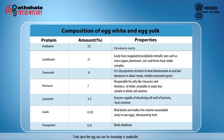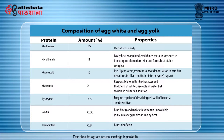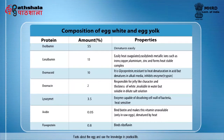Ovomucin 2% is responsible for the jelly-like character and thickness of white; it is insoluble in water but soluble in dilute salt solution. Avidin present at 0.05% binds biotin and makes this vitamin unavailable, but it gets denatured by heat. Lysozyme 3.5% is an enzyme capable of dissolving the cell wall of bacteria and is heat sensitive. Flavoprotein 0.8% binds riboflavin.